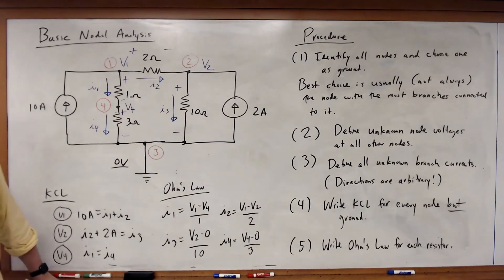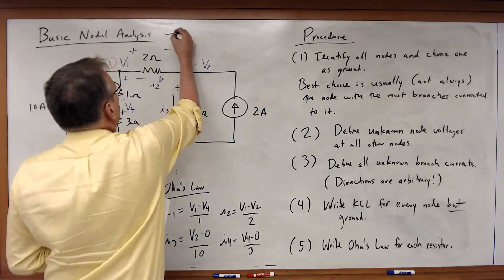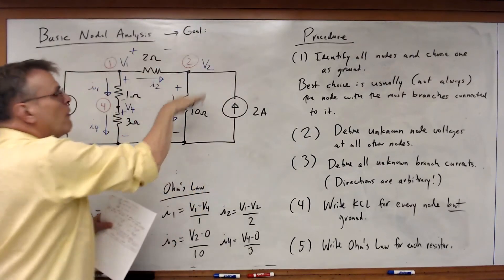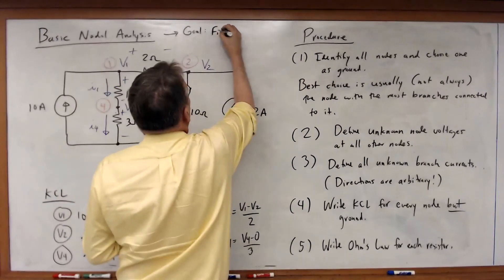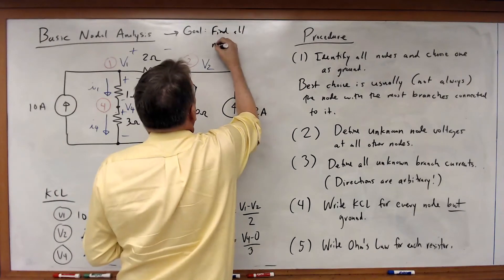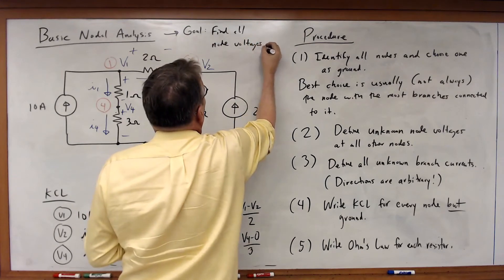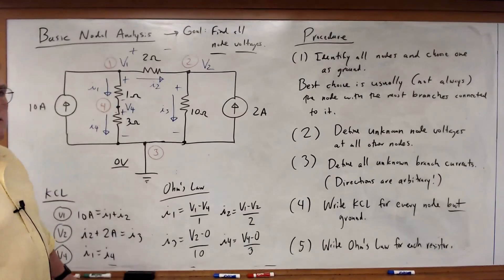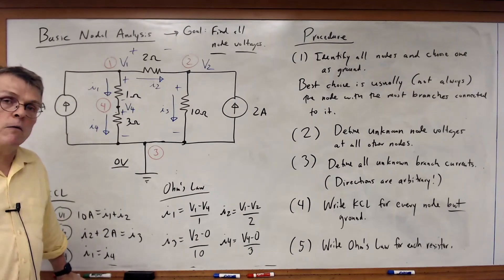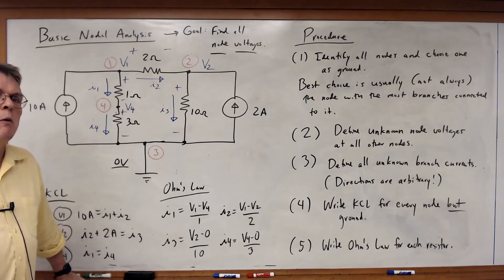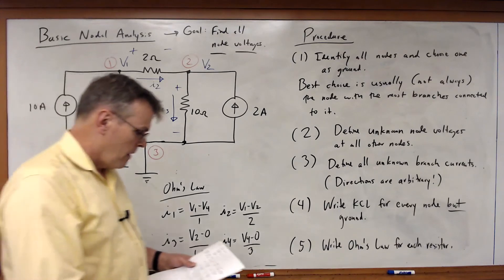Now, we've written all of our equations. Now, what is our goal? What are we trying to accomplish here as we solve these equations? It's very simple. Our goal is to find all the node voltages. That's what we're trying to calculate, the node voltages. Because if you can calculate the node voltages, you can find any voltage or any current in the circuit. So that's what we're doing here as we write these equations.